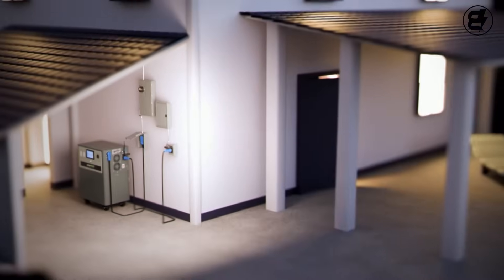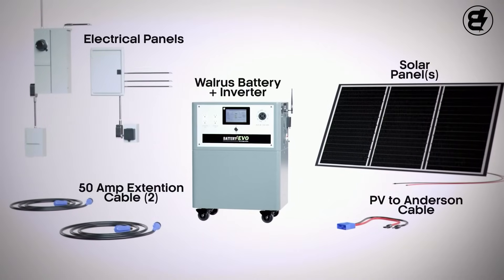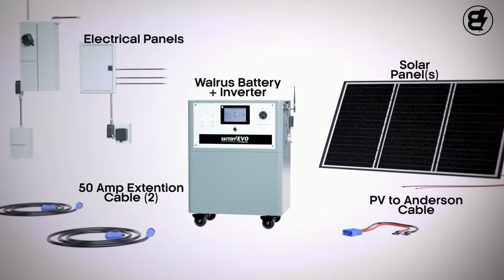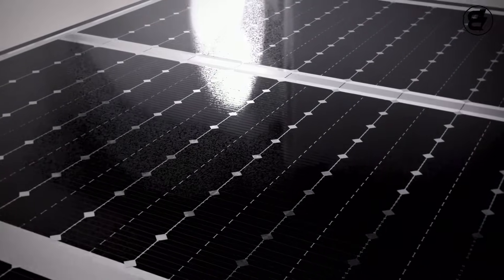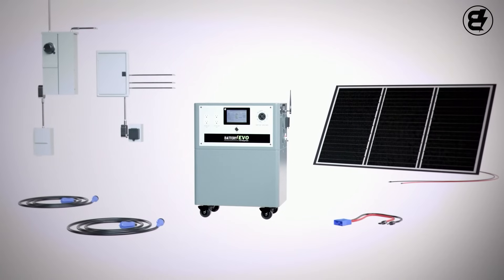When your Walrus arrives, you'll receive your inverter, the battery, and all the necessary cables and accessories. If you order a solar kit, you'll also receive your 550-watt solar panels.